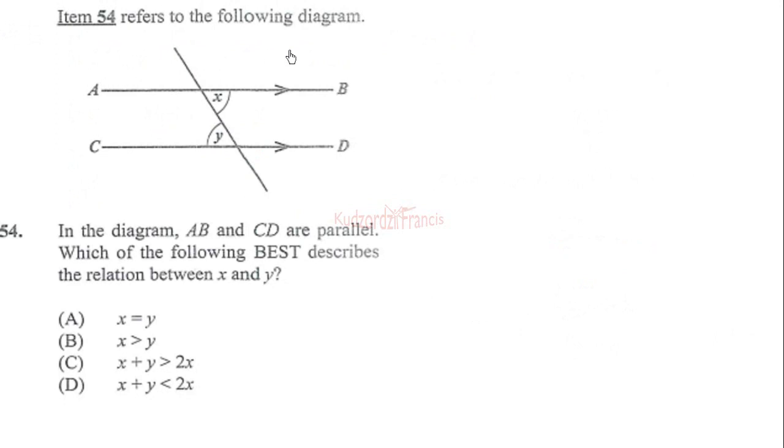Item 54 refers to the following diagram. AB and CD are parallel lines. Which of the following best describes the relation between x and y? We know that alternate angles are equal. X and y are alternate interior angles, so because they are equal, we have x equals y. Therefore, the correct choice is A.